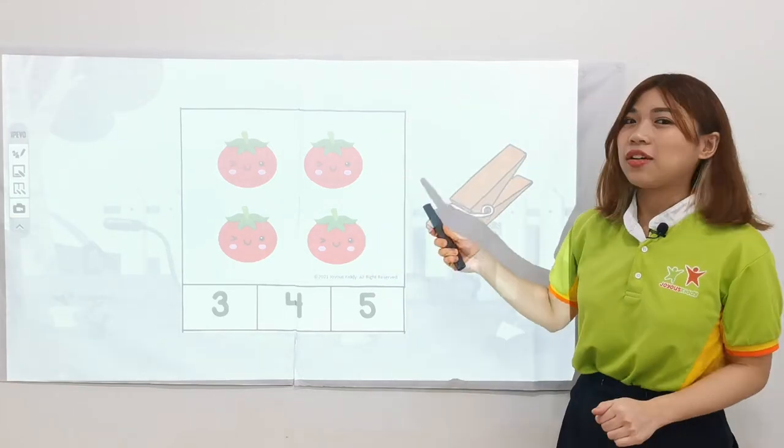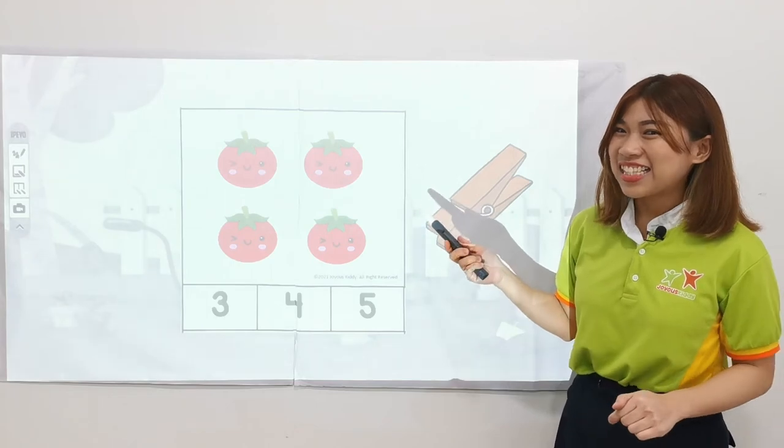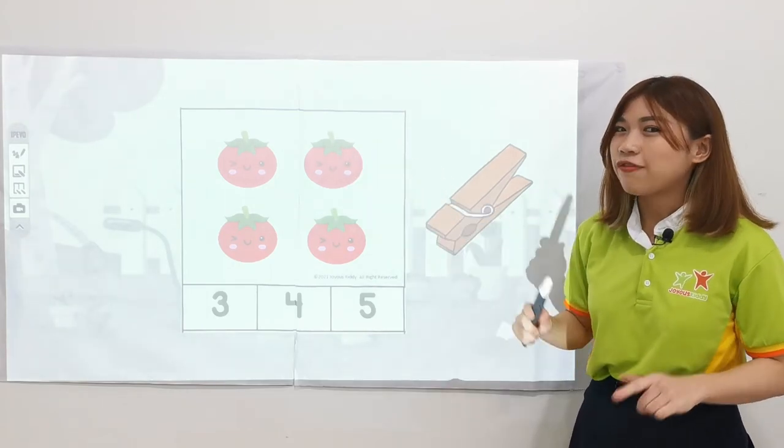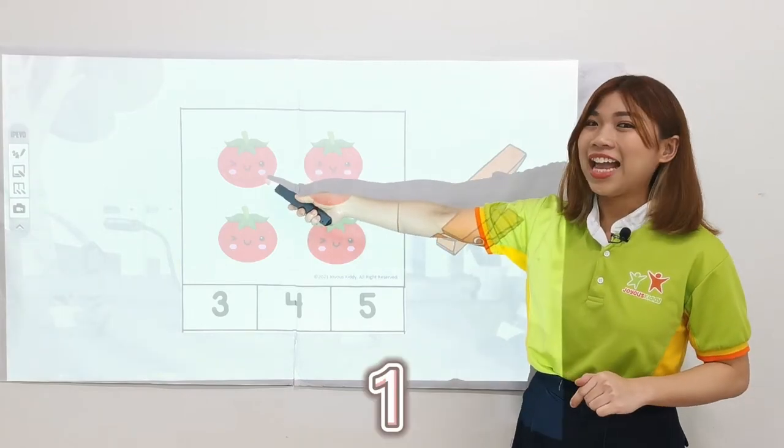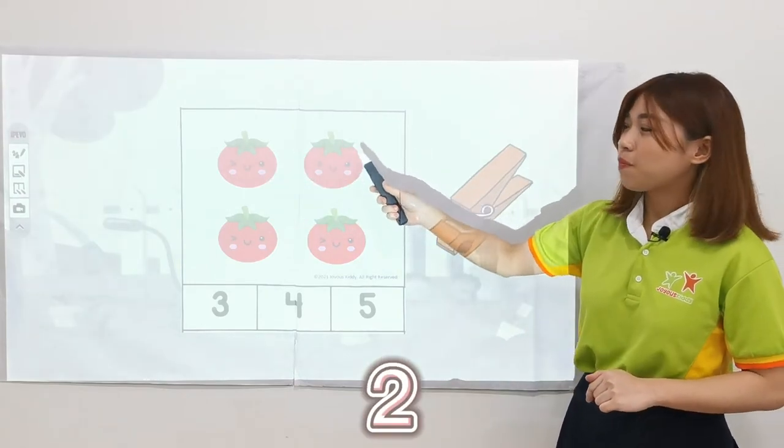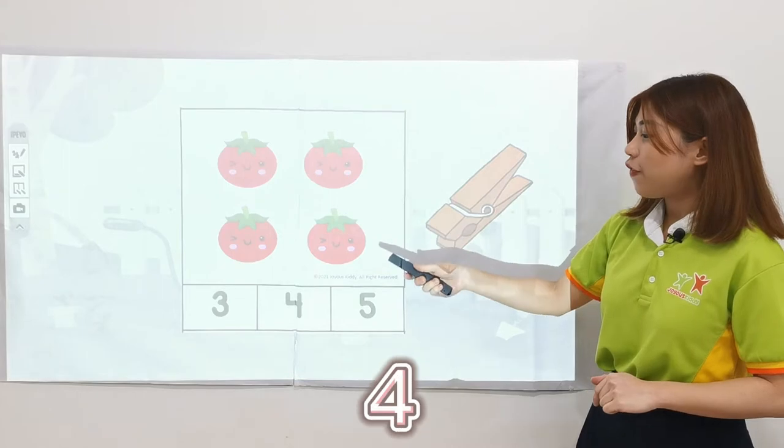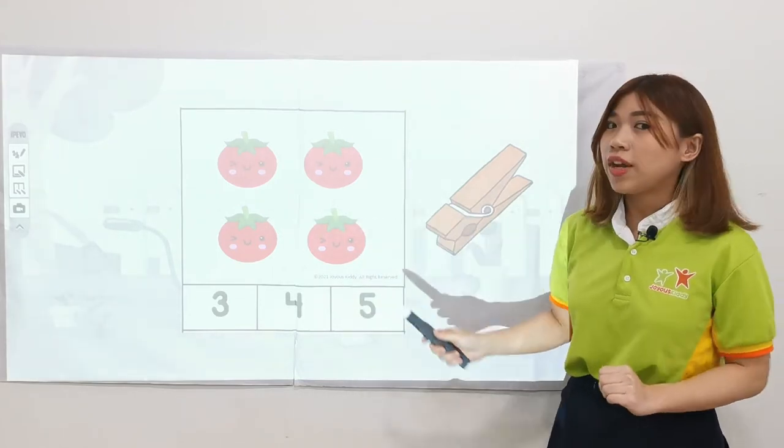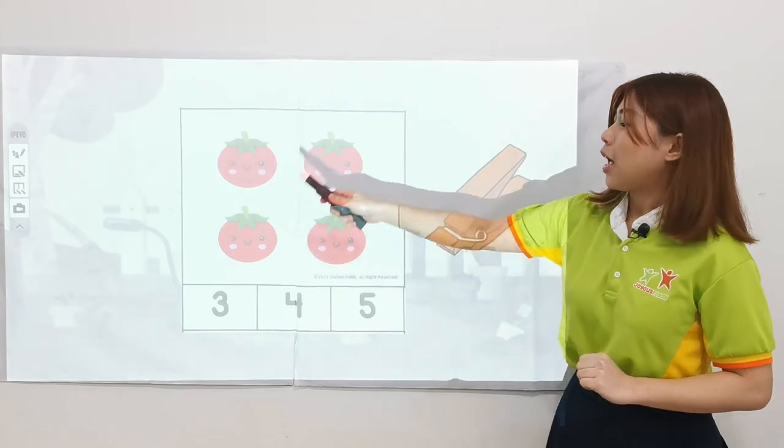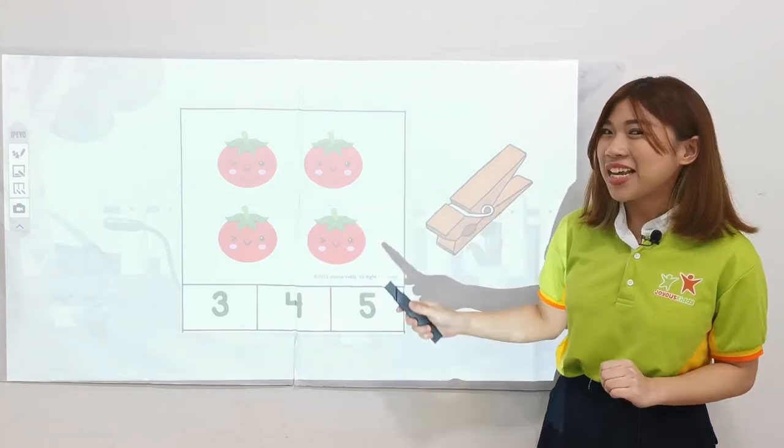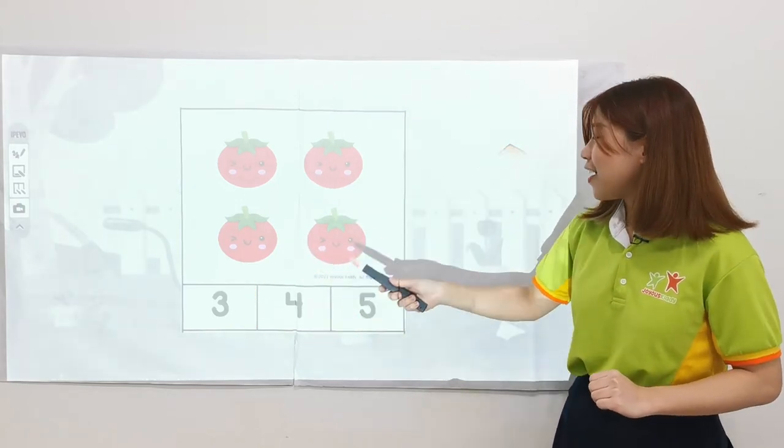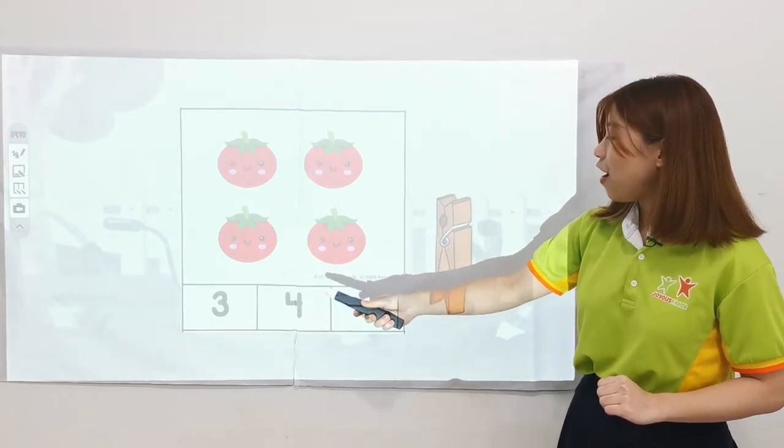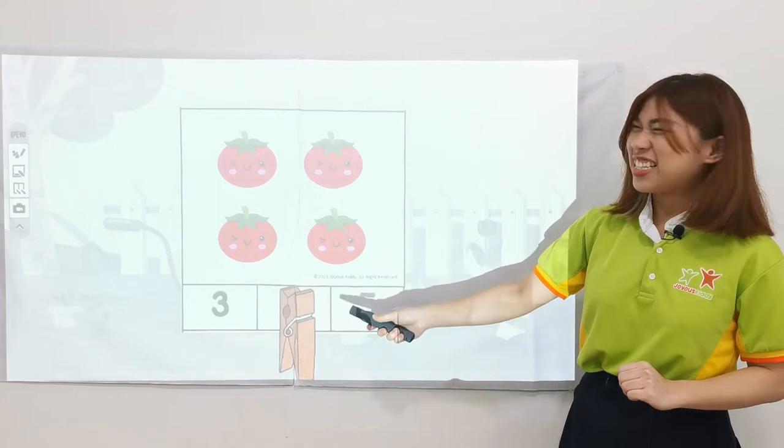So look! What vegetable is this? It's a tomato! So how many tomatoes do we have? Let's count! 1, 2, 3, 4. We have 4 tomatoes. And can you tell me which is number 4? Number 4 is in the middle! Correct! So you may put your clothespin to number 4! That's it!